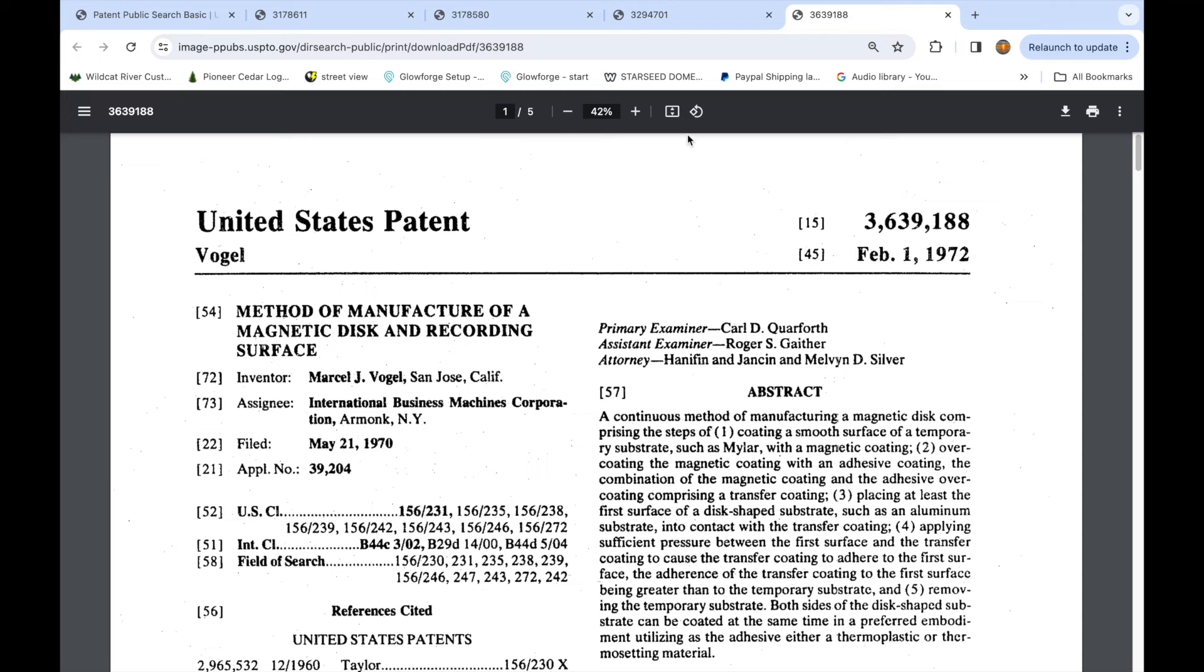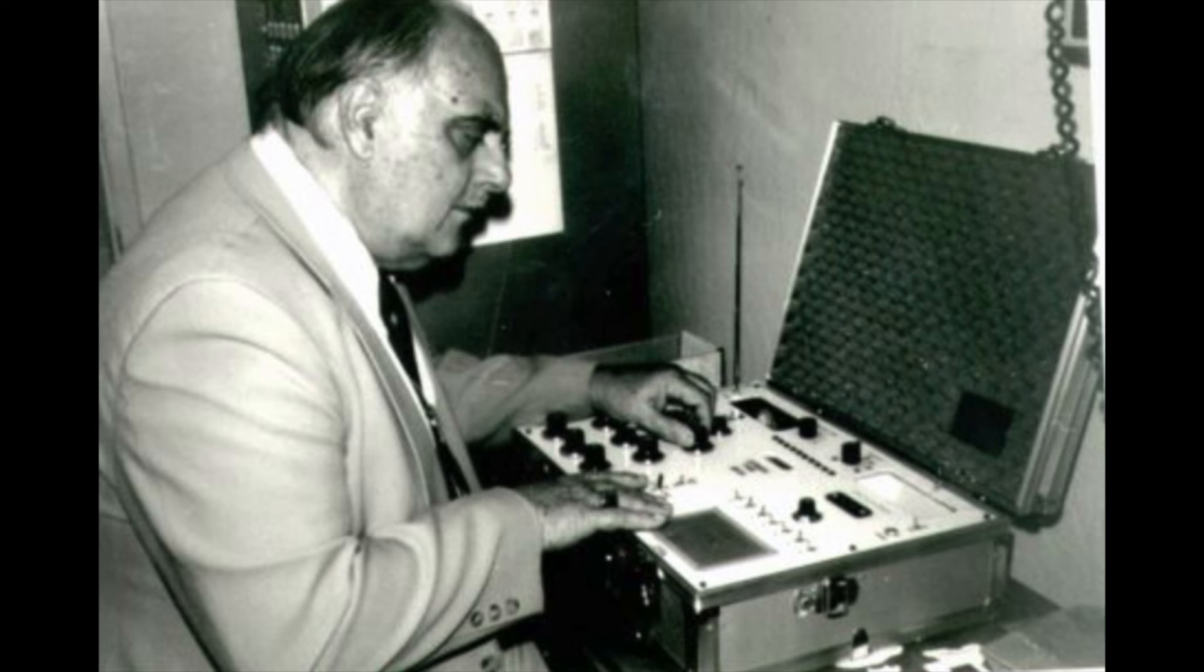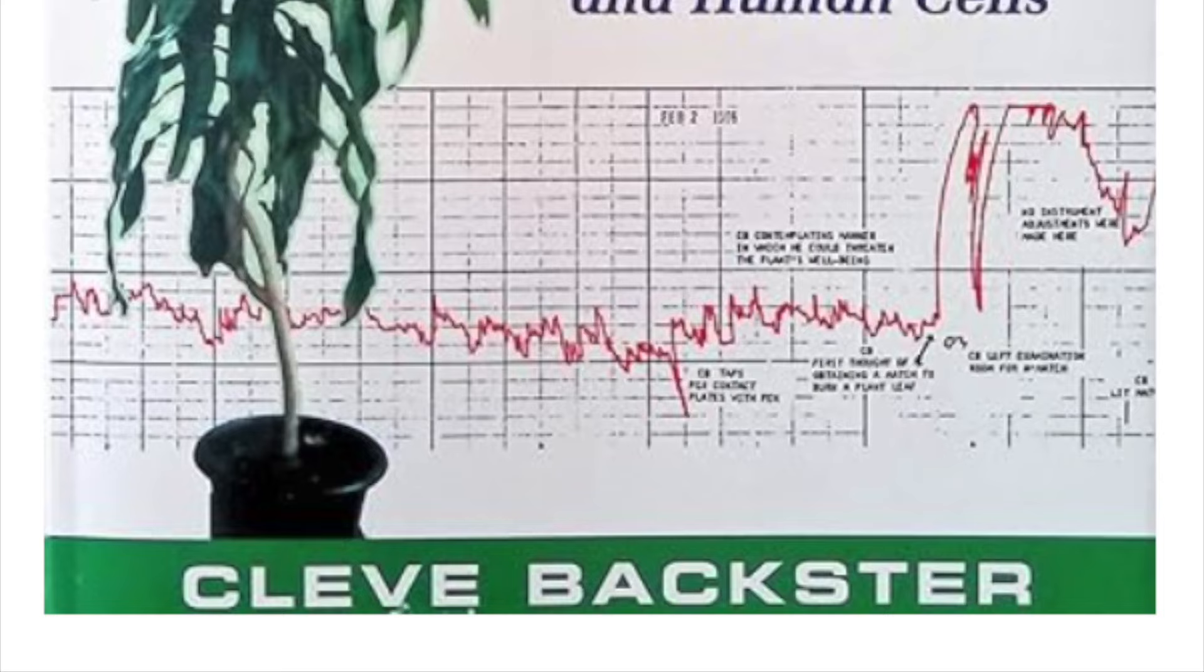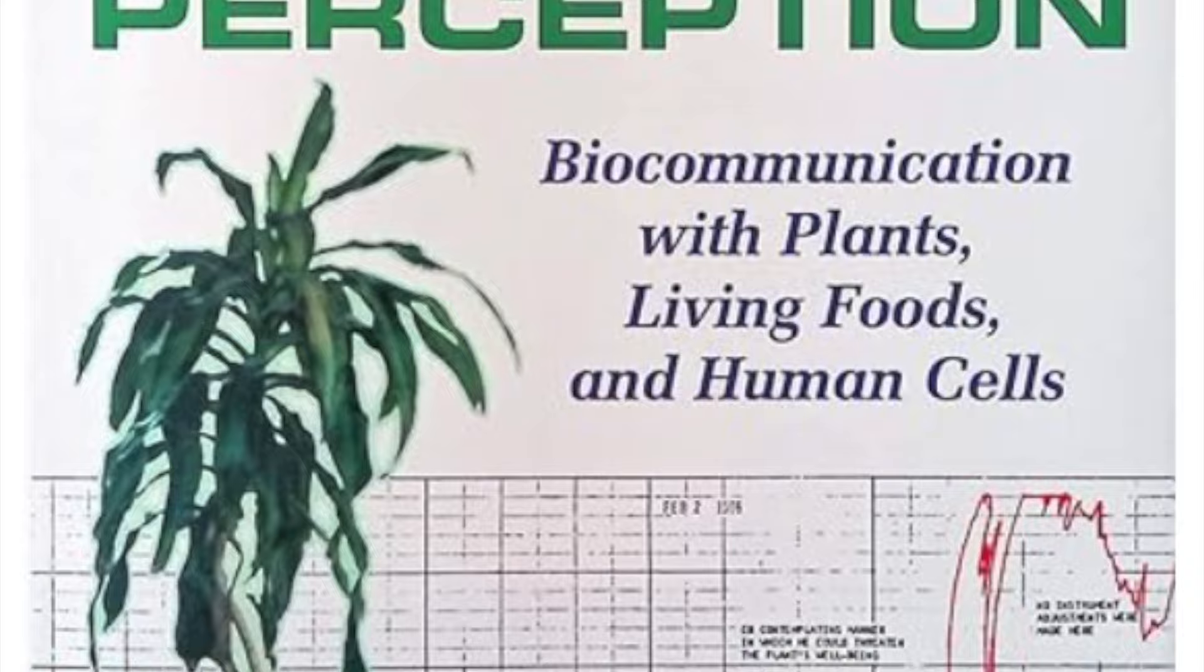He worked for IBM for 27 years as one of their most top research scientists on pioneering innovations in magnetics, optic electrical devices, and liquid crystal systems. After Marcel left IBM he formed a non-profit called Psychic Research Incorporated. This was a result of Marcel moving from a rational scientist to a spiritual scientist as he put it. While at IBM he had come across two articles that ended up capturing his attention.